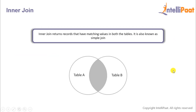The inner join basically gives us those records that have matching values in both tables. So if we have table A and table B, when we apply inner join on these two tables we'll get only those records which are common to both table A and table B.